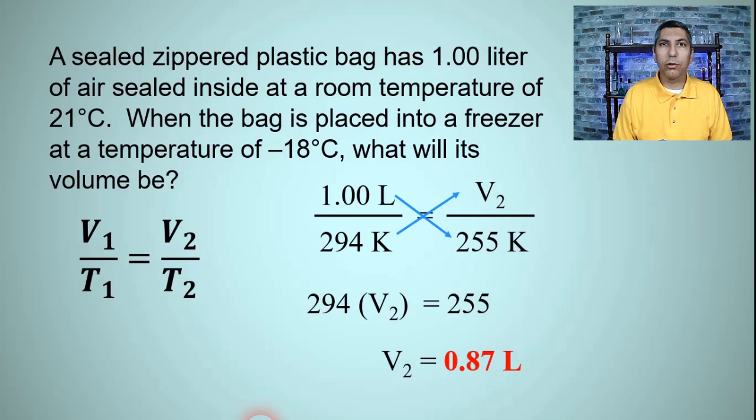And that answer makes sense because Charles law basically tells us that when an enclosed gas is cooled its volume is going to shrink down. It was cooled from 21 degrees down to a much colder temperature so it's going to shrink from one liter down to something smaller than that, about 0.87 liters is a reasonable answer.